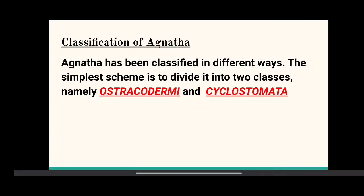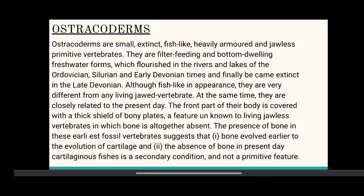Classification of Agnatha: Agnatha has been classified in different ways. The simplest scheme divides it into two classes, namely Ostracodermi and Cyclostoma. Ostracoderms are small, extinct, fish-like, heavily armored and jawless primitive vertebrates. They are filter-feeding and bottom-dwelling freshwater forms which flourished in the rivers and lakes of the Ordovician, Silurian, and early Devonian time.